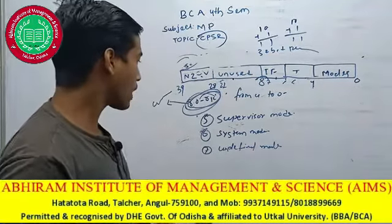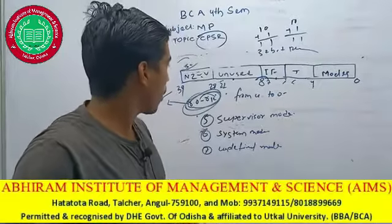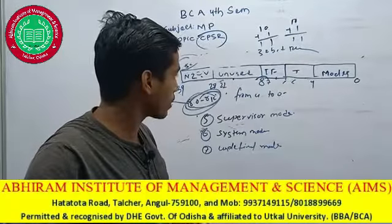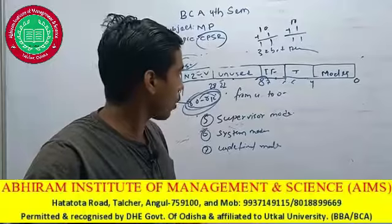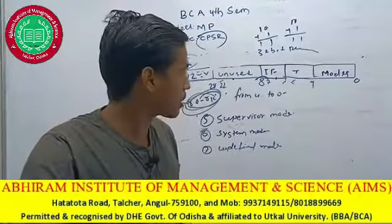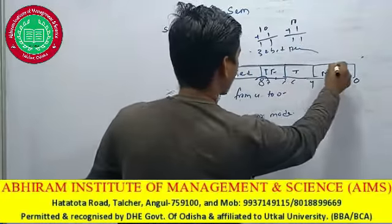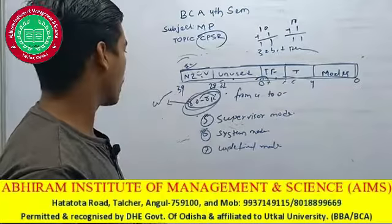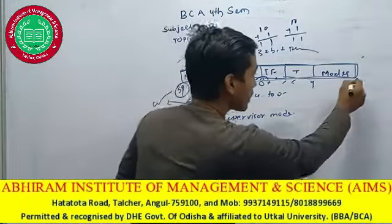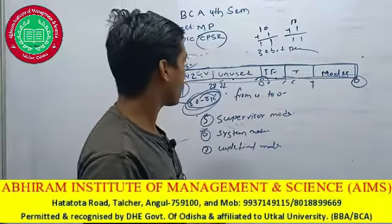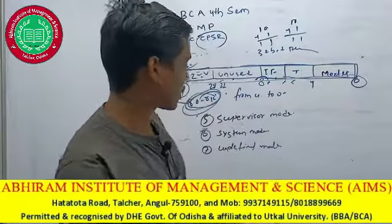So all these modes and their functions we have to discuss in the next class. Understand all these things because these are the most important concepts — using them you have to do your programs and find solutions. This 32-bit register, starting from bit 31 and ending at bit 0. Hopefully you all understand. Thank you, and in the next class we will discuss all these things.